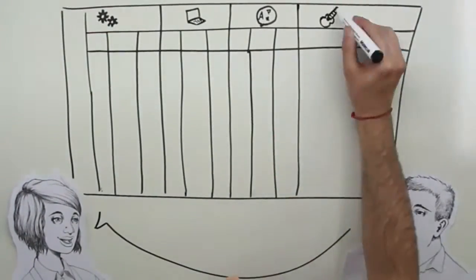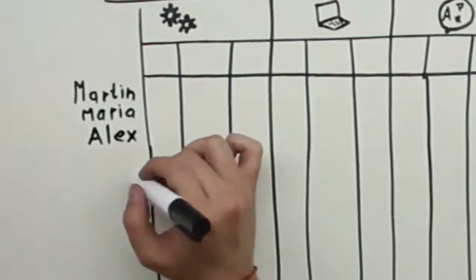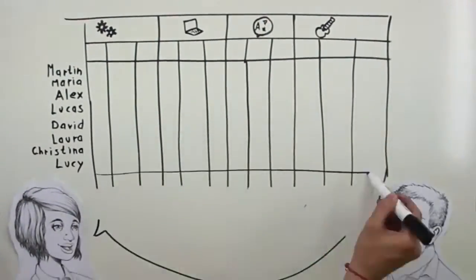Then, put the names of your employees into the rows and competencies into the columns.